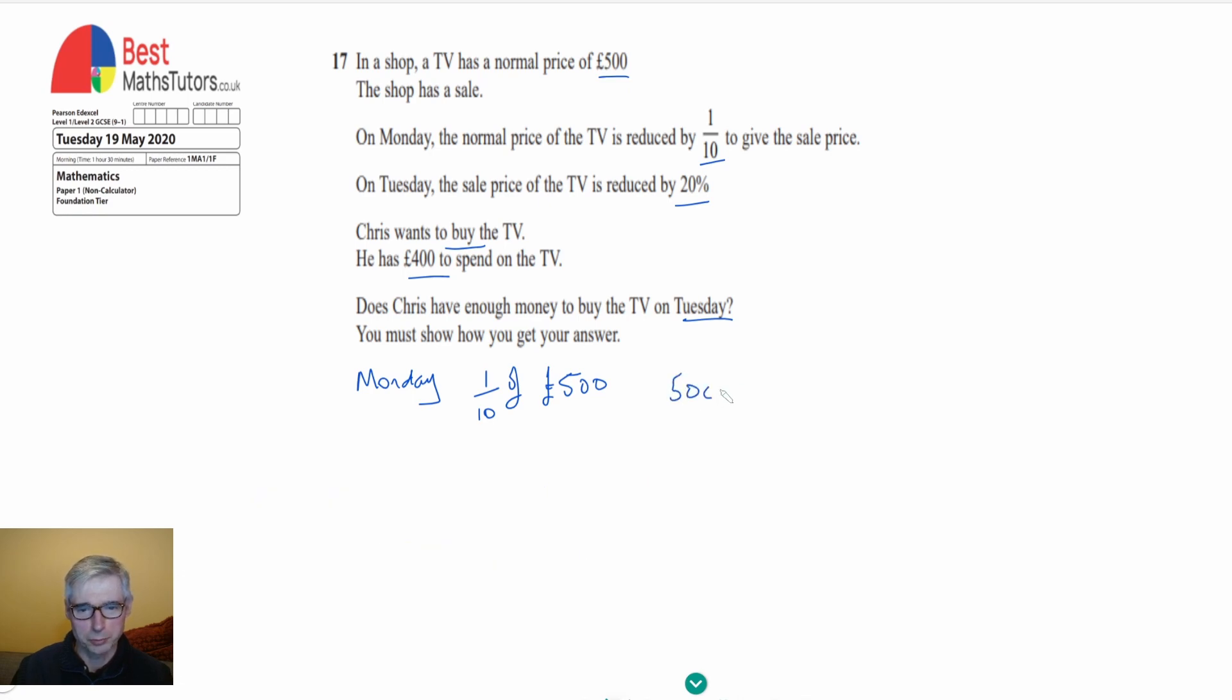We can see at the moment the decimal point is after the zero there. If we move it back one place then it's going to go after the first zero. So that means that one-tenth is actually just £50.